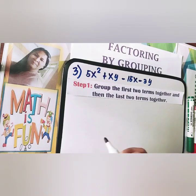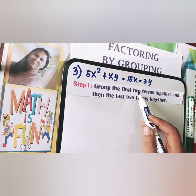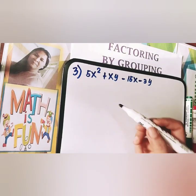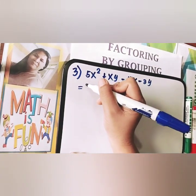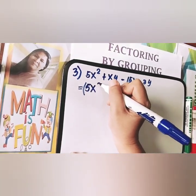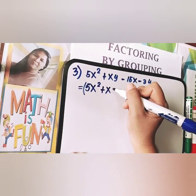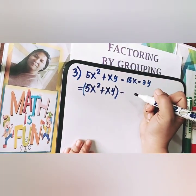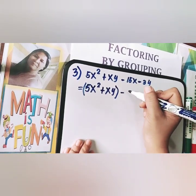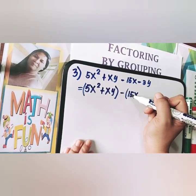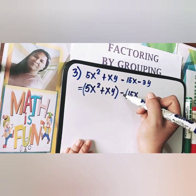Let's follow again step number 1 — group the first two terms together and then the last two terms together. It will become (5x squared plus xy) for the first group. For the second group, we need to be careful — copy minus, and then (15x plus 3y), since the operation outside is minus and we need the signs inside to reflect that when distributed back.